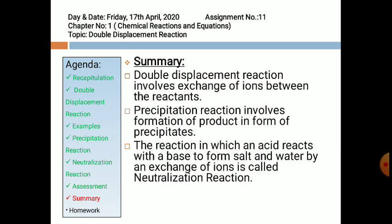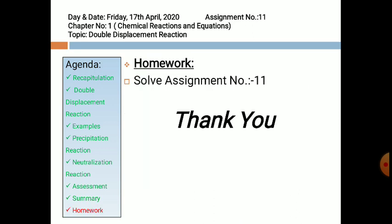Now for today's summary: double displacement reaction involves exchange of ions between the reactants. Precipitation reaction involves formation of a product in the form of precipitates. Neutralization reaction is the reaction in which an acid reacts with a base to form salt and water by exchange of ions. I hope double displacement reaction is somewhat clear to you. In today's homework you have to solve assignment number 11. Thank you.